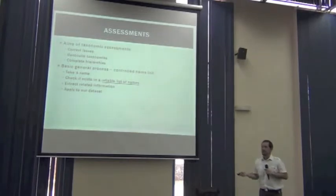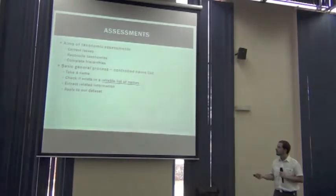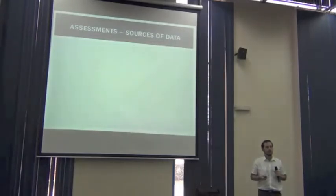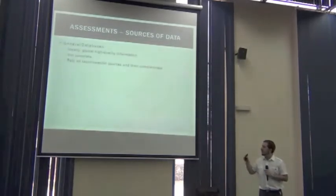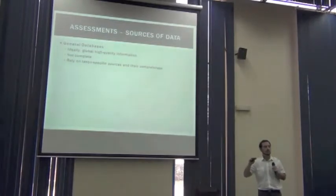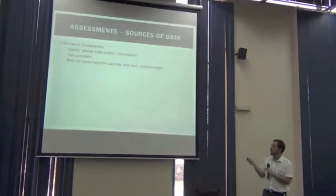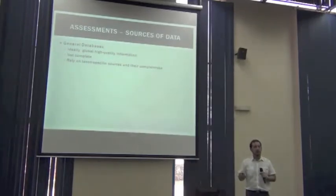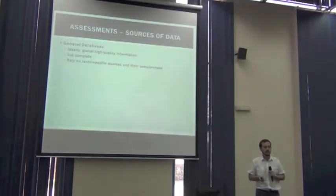The key here is to have a reliable list of names. And this can be achieved by going to different taxonomic information sources. The most general source of taxonomic information are what we call the general databases, which ideally are global, high-quality sources of taxonomic information.